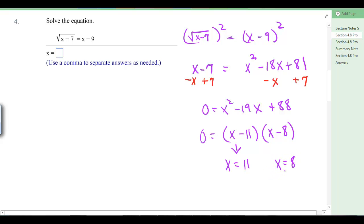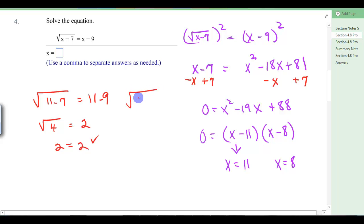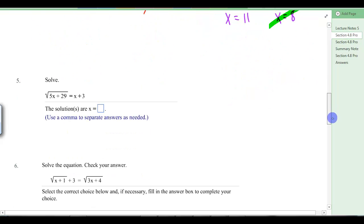Let's check both of those and see if they work. So when we're checking it, we've got the square root of 11 minus 7 equals 11 minus 9. So that's the square root of 4 equals 2. 2 equals 2. Check. Let's try the other side. Square root of 8 minus 7 equals 8 minus 9. So that's the square root of 1 equals negative 1. So that's 1 equals negative 1. That does not work. So that discards that one. So here in our answer, we would only put the 11. We would ignore the 8.